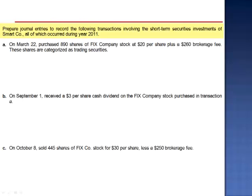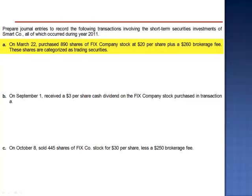Exercise 2. Prepare journal entries to record the following transactions involving the short-term securities investments of Smart Company, all of which occurred during 2011. Letter A: On March 22nd, purchased 890 shares of FIX Company stock at $20 per share plus a $260 brokerage fee. These shares are categorized as trading securities.